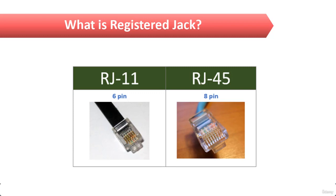Most of the time UTP uses RJ11 and you use a crimper to attach them to a cable, just as you would with BNC connectors. The only difference is that the die holding the connector is of a different shape. Remember: BNC connectors are used for coaxial cables and registered jack RJ connectors are used for twisted pair cable.